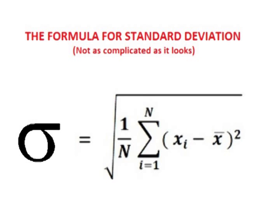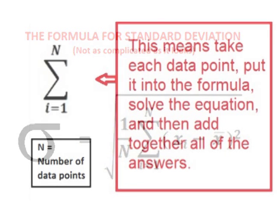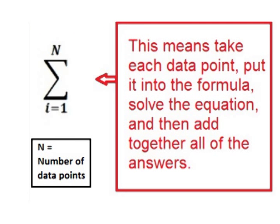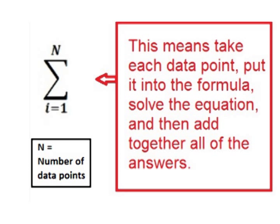The formula for calculating the standard deviation is not as complicated as it looks. The large E is called an epsilon and it is the fifth letter in the Greek alphabet. There is an i equals one on the bottom and an n on the top. The n represents the total number of data points. The epsilon means to take all of the data points one at a time, plug them into the formula as the value for x, solve the formula for each data point, and then add all of the answers together.